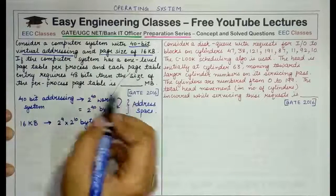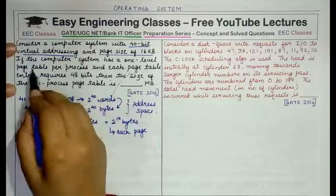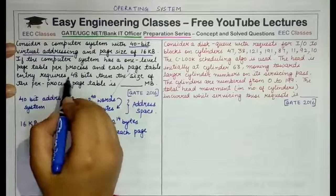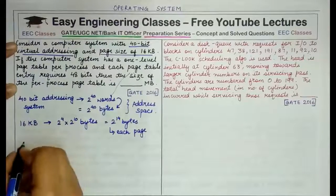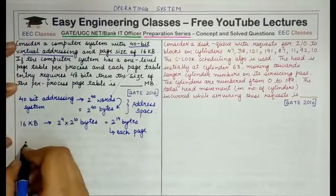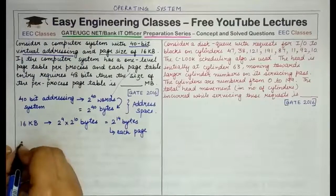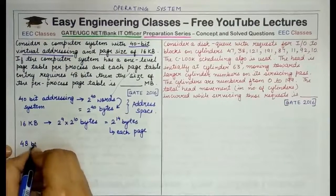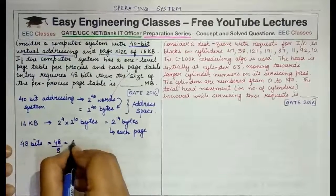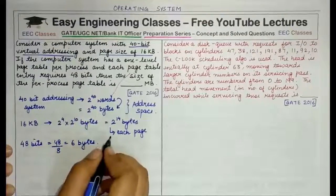Each page is of 2 raised to power 14 bytes. The next thing provided in the question is that it is a one level page table per process and each page table entry requires 48 bits. So 48 bits, you have to convert it into bytes because everything is in bytes. 48 bits means 48 divided by 8, which is equal to 6 bytes.